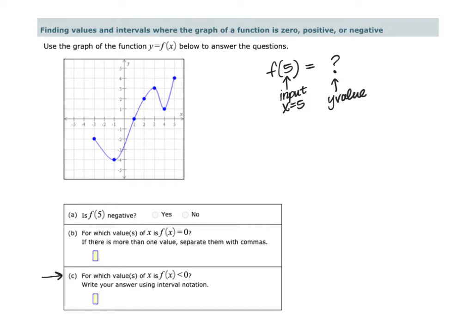So looking at our graph, if x is equal to 5, looking at the graph, that's the coordinate right here, the y value there is positive 4. So f of 5 is equal to positive 4. So is f of 5 negative? Our answer here would be no.